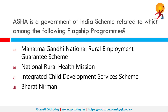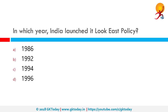ASHA is a Government of India scheme related to which among the following flagship programs? ASHA, or Accredited Social Health Activist, is a trained female community health activist and a key component of the National Rural Health Mission. She is selected from the village itself and works as a link between the community and the public health system. India's Look East policy was first pursued by the Narasimha Rao government in 1992, focusing on South East Asia and later converted into the Act East policy.